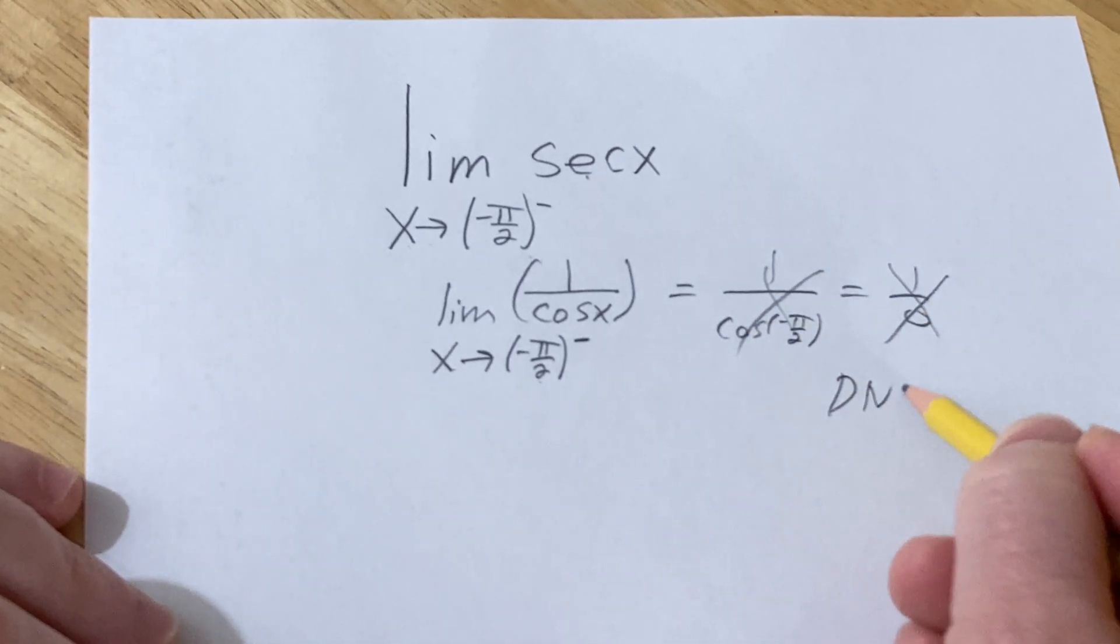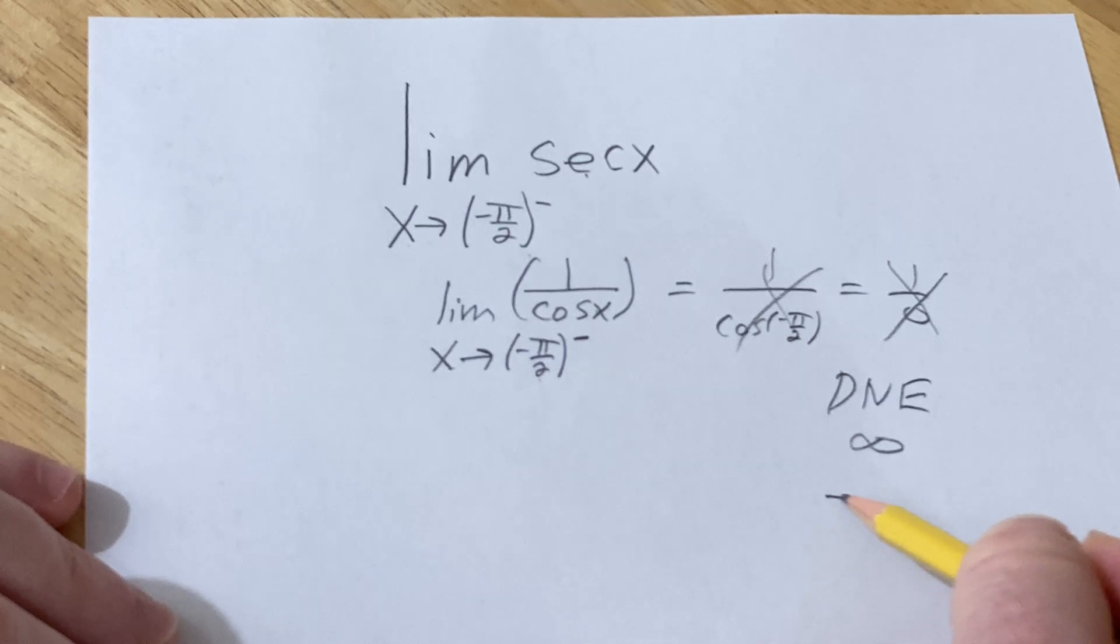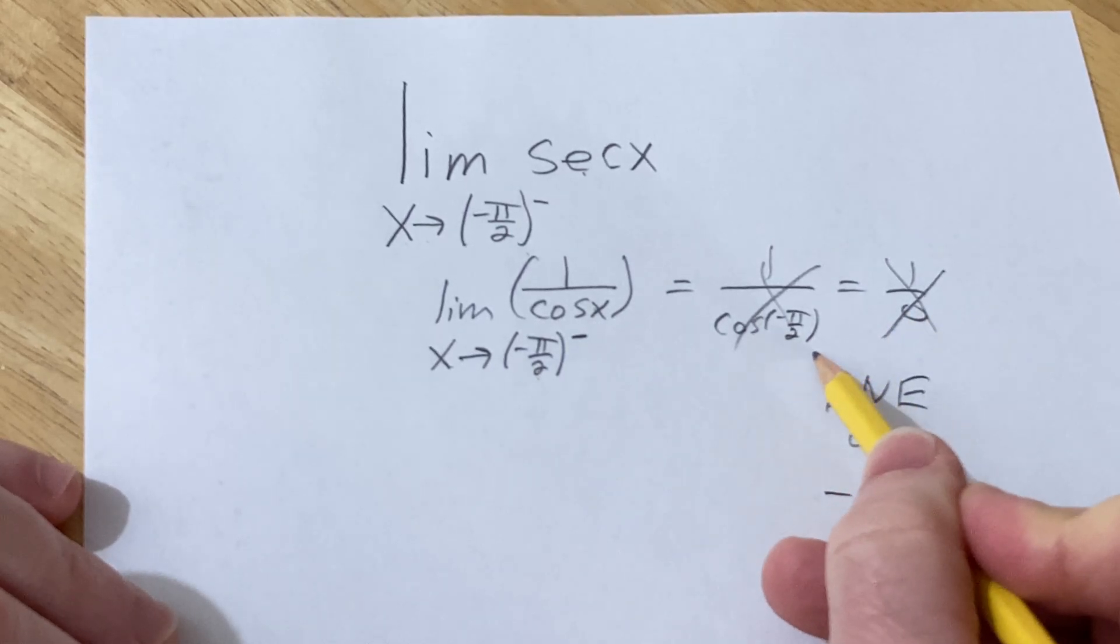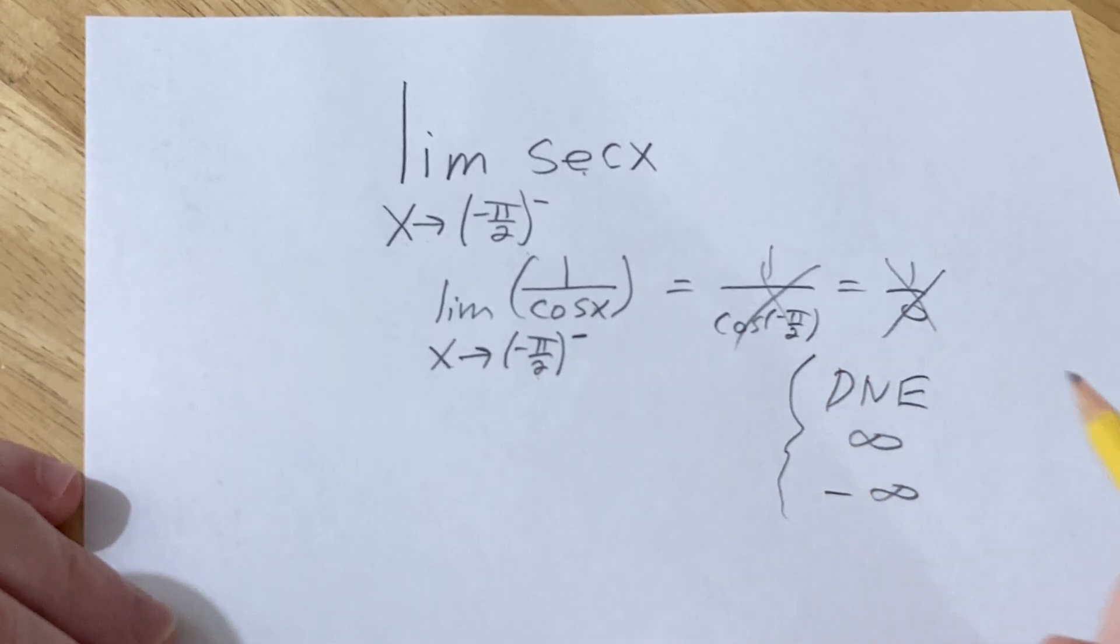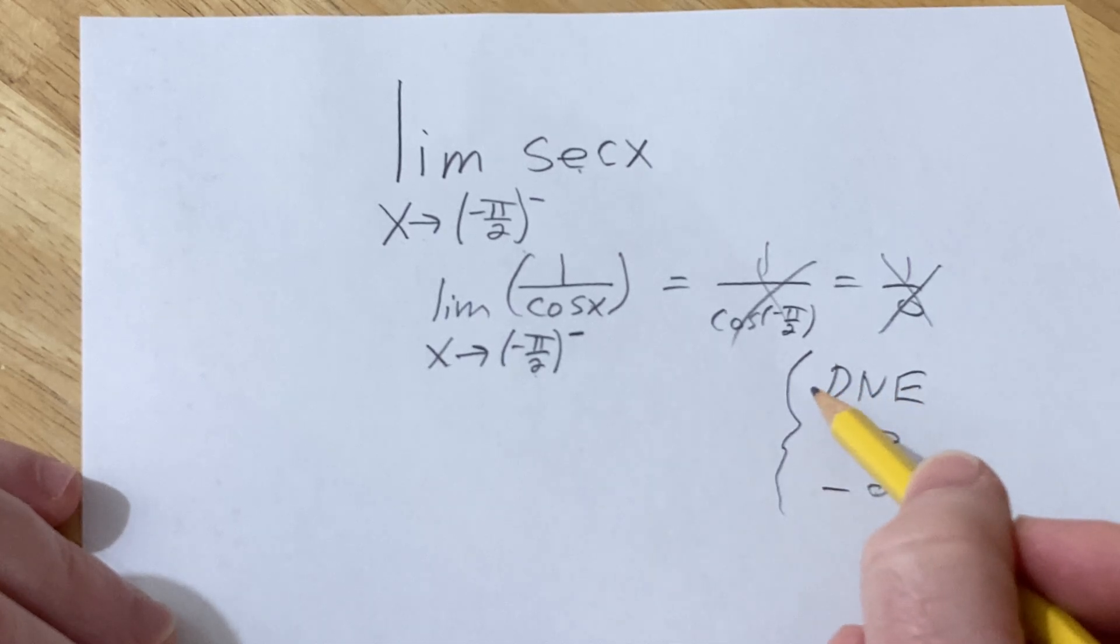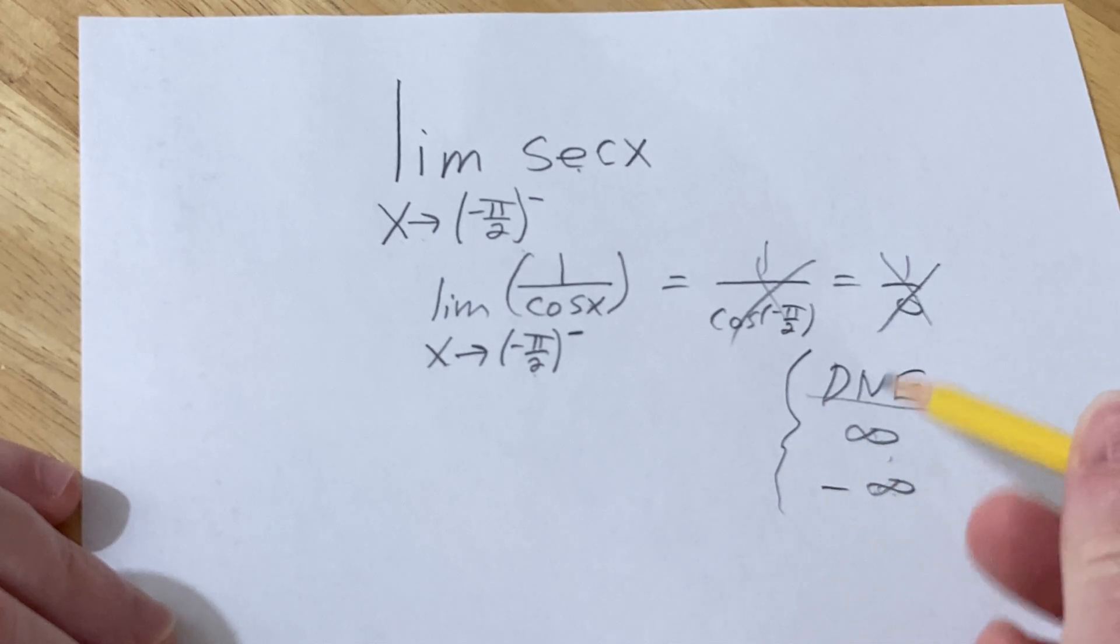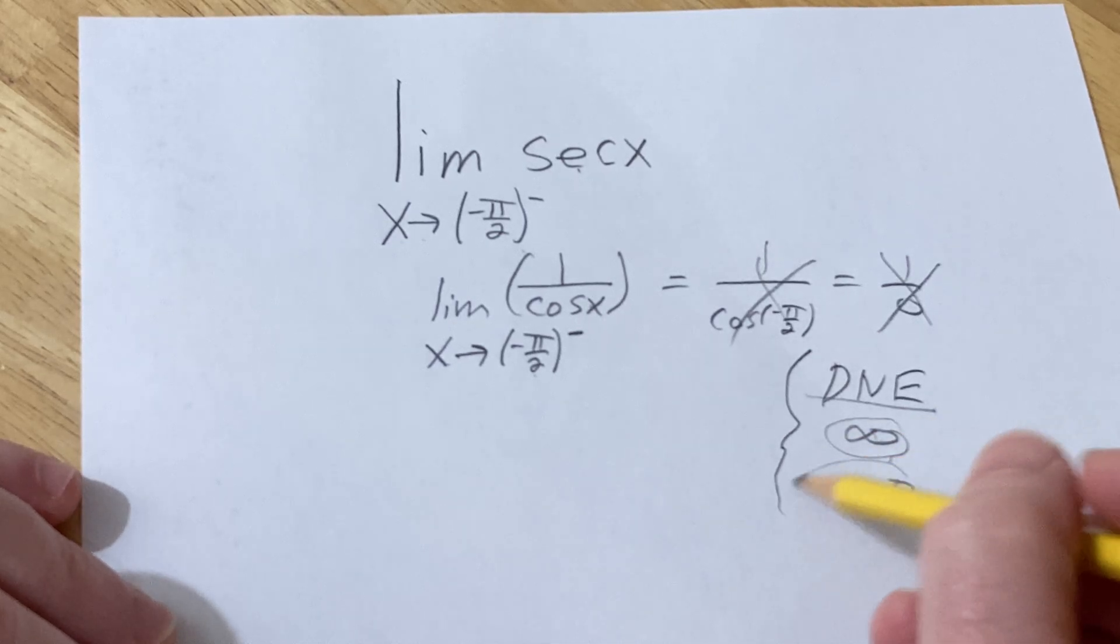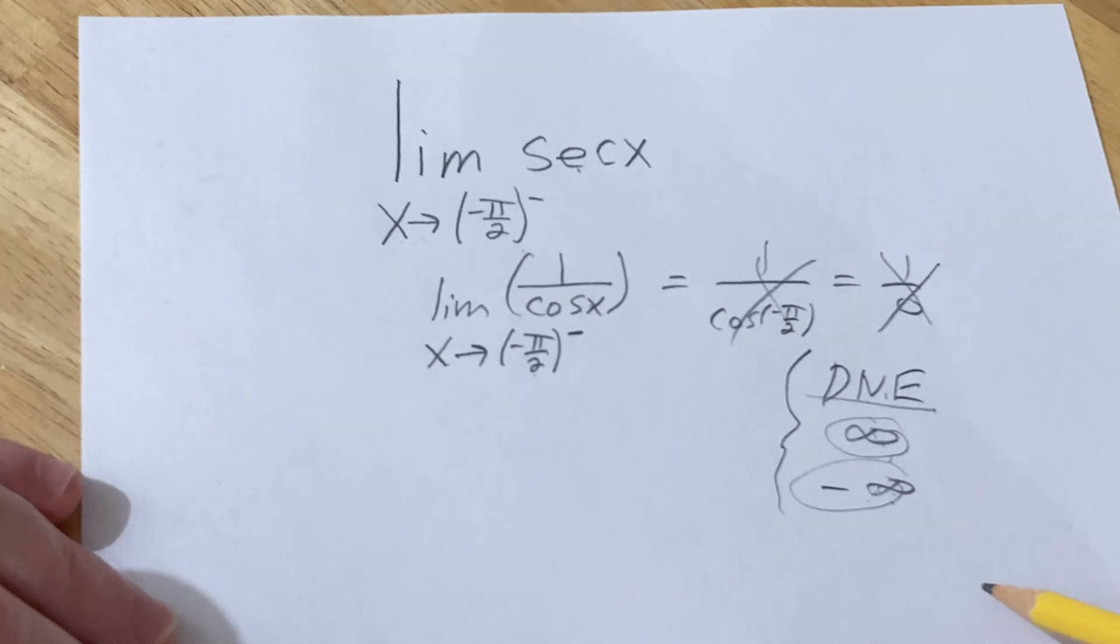We either write DNE, infinity, or negative infinity. We have to figure out which one is appropriate. In any of these cases, the answer is still DNE, except infinity and negative infinity are more descriptive. So whenever possible, you try to use these because they're more descriptive. If you can't use these and it still doesn't exist, then you choose DNE.